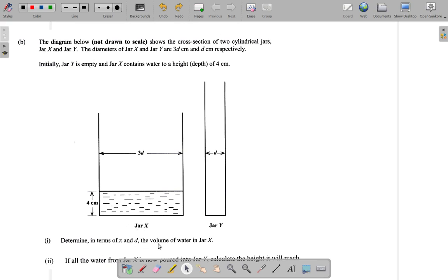Determine in terms of π and D the volume of water in Jar X. Let's see. Now, they say it is cylindrical. So if you look at the bottom or top of the jar, you'd see a circle.